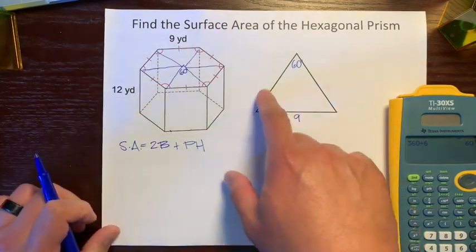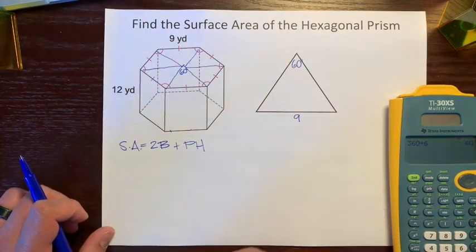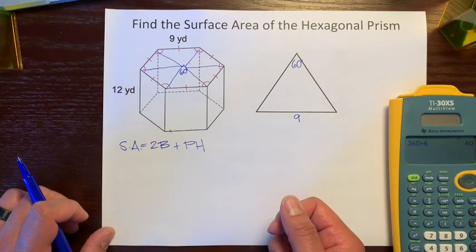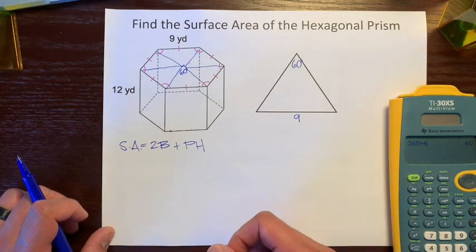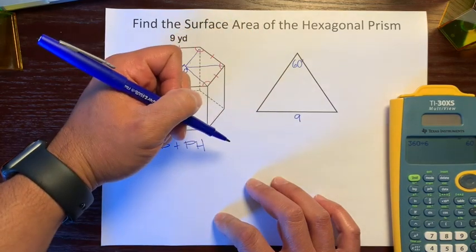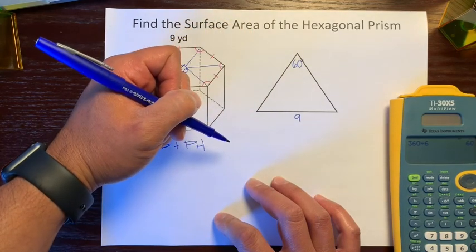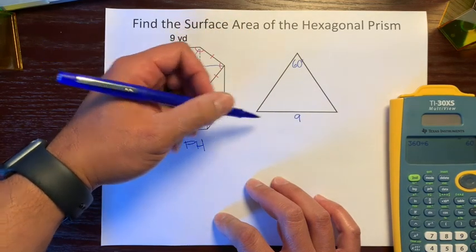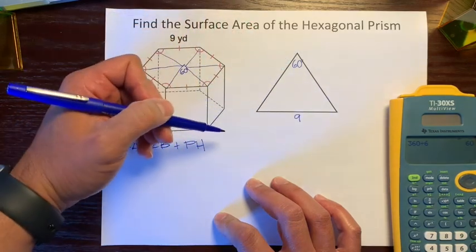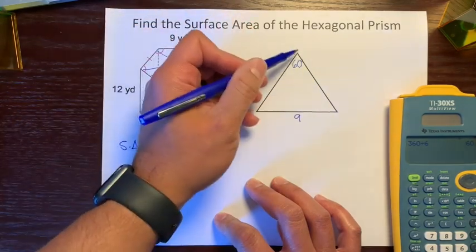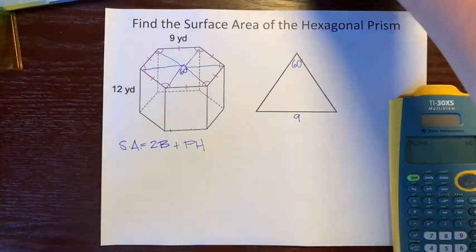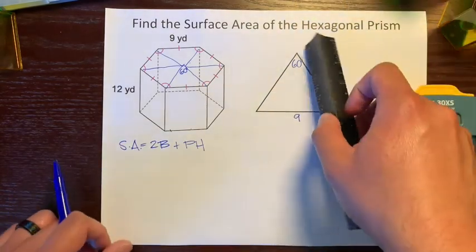So let's find the area of this triangle. The area of a triangle is base times height divided by 2, and remember the base and the height are always perpendicular — they make 90-degree angles. This side and this side are not perpendicular, so we need to create perpendicular sides.